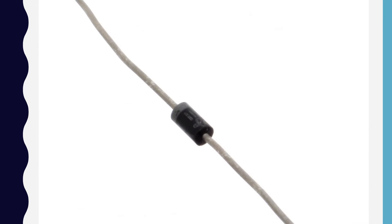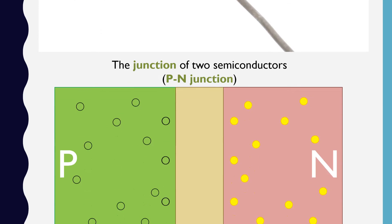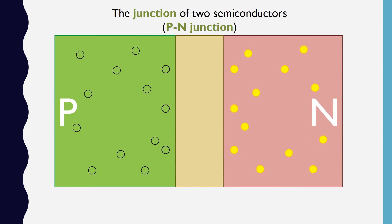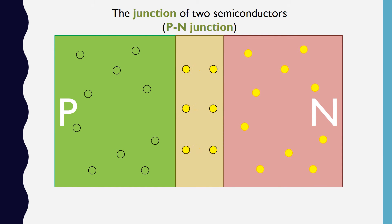By the way, here's what a diode actually looks like. The place where layers of p-type and n-type materials meet, called a junction, is where some of the most interesting things happen. Because of the contact between the two semiconductors, holes and free electrons cross over into a small region of the neighboring material and cancel each other, leaving behind negatively charged ions on the p-side and positively charged ions on the n-side. This small region, known as the depletion region, keeps additional electrons and holes on either side from crossing over into the other side.